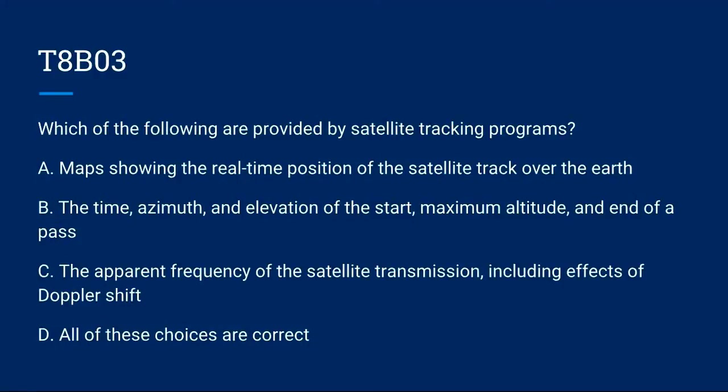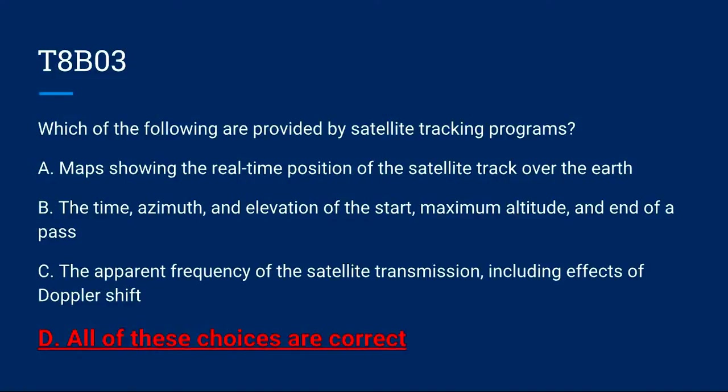T8B03: Which of the following are provided by satellite tracking programs? A. Maps showing real-time position of the satellite track over the Earth. B. The time, azimuth, and elevation of the start, maximum altitude, and end of a pass. C. The apparent frequency of the satellite transmission, including effects of Doppler shift. Or D. All of these choices are correct. The correct answer is D: all of these choices are correct.